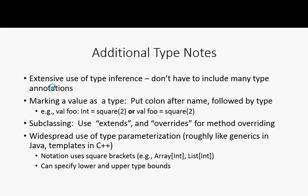Scala makes use of type inference — it tries to figure out the type of things, and it's very clever. It figures it out from the return type of the thing you're calling or from what's needed as a parameter. So we could write 'val foo = square(2)' and if square returns an integer, it will know foo is an integer. Or we can write 'foo: Int' to be explicit. Either way it'll typically be happy.